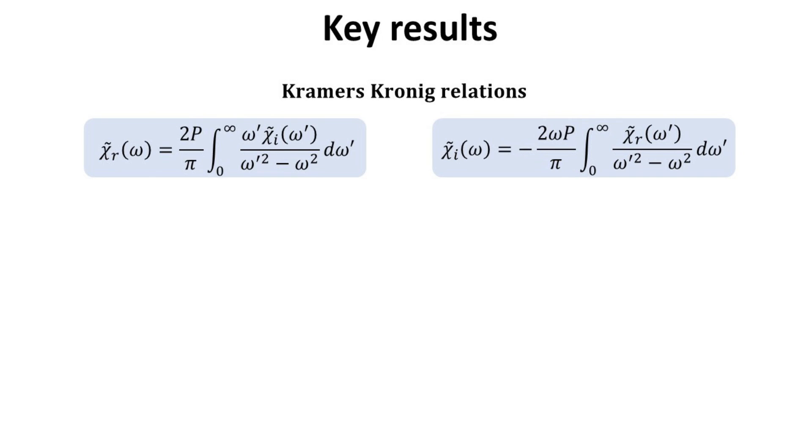Great. Let me summarize the two key results in this chapter. We showed the mathematical result that the generalized response function chi tilde, which is an analytic function in the upper half plane, must satisfy the Kramers-Kronig relations. These are bi-directional mathematical relations connecting the real and imaginary parts of chi tilde.